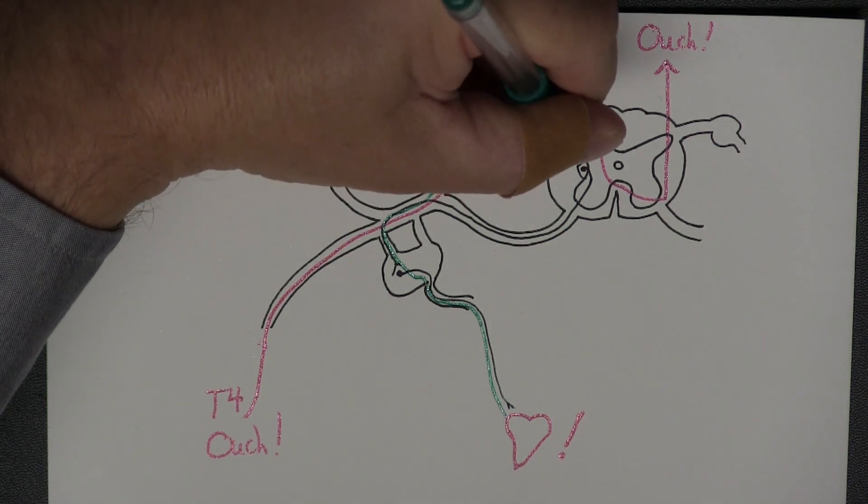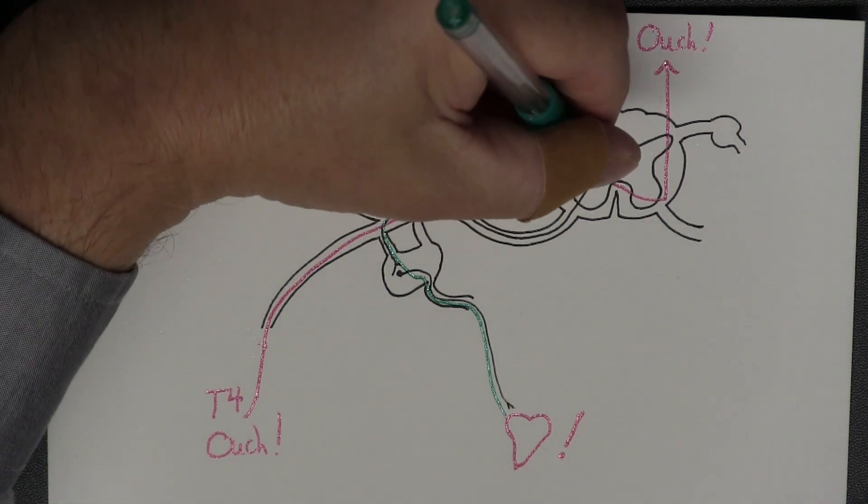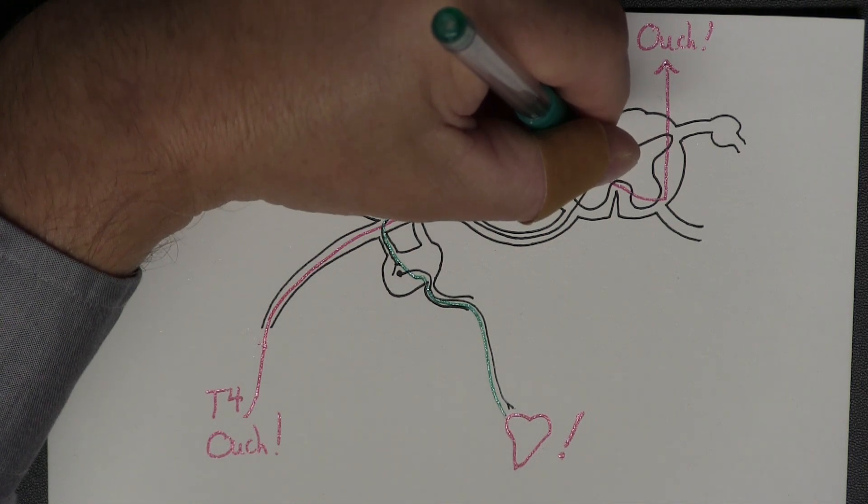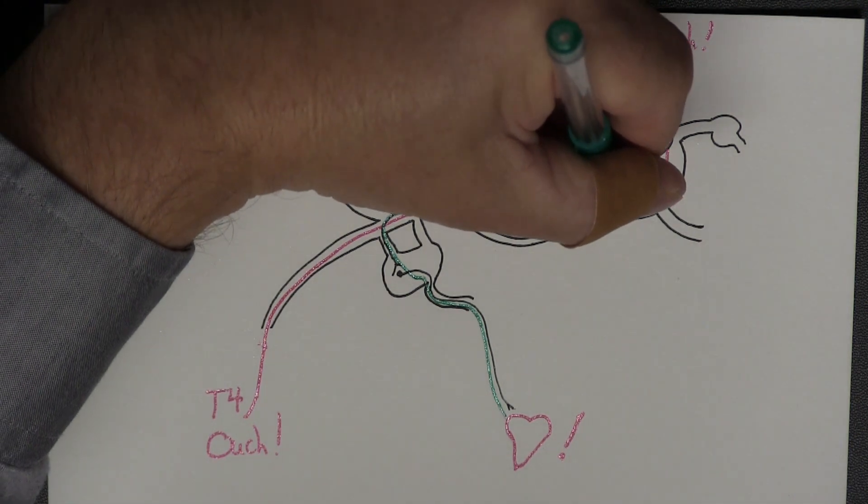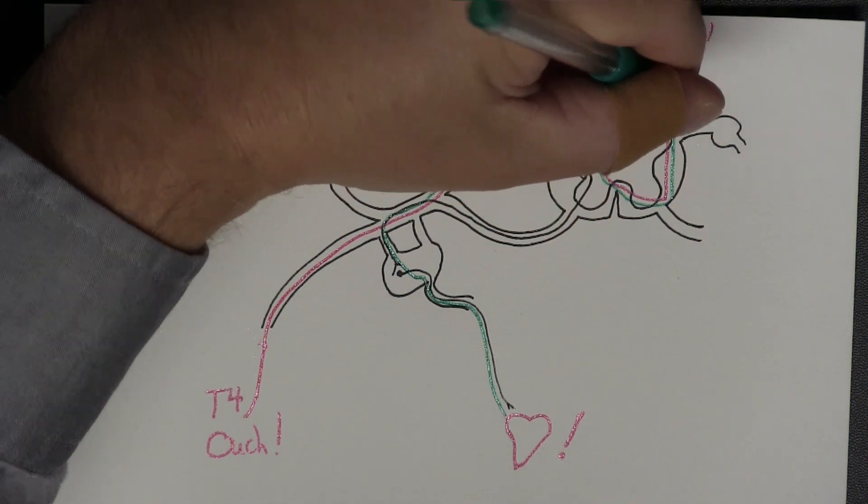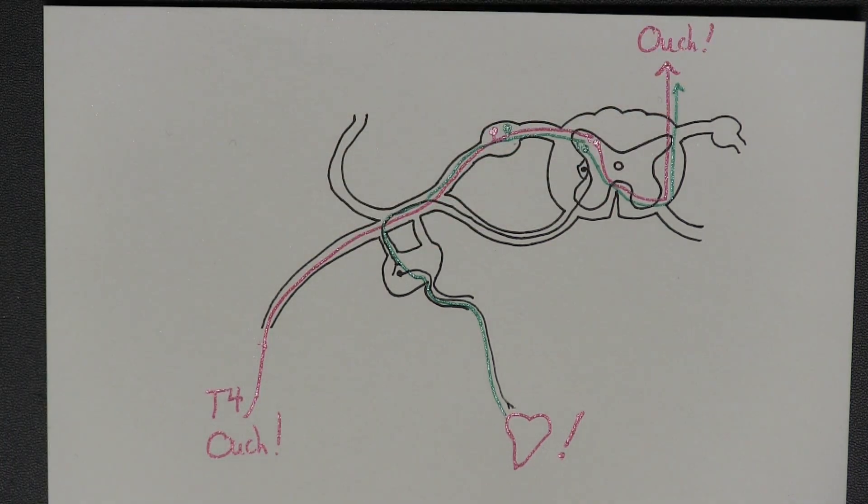Comes into the posterior horn, parallel to those somatic fibers that we saw a minute ago, and will synapse with its own second-order neuron here in the posterior horn, which will follow the anterior commissure there up to the brain, and it's going to let my brain know that the heart is in pain.